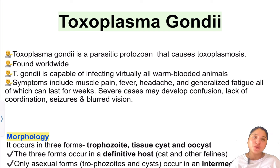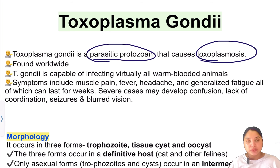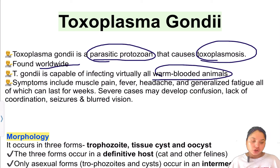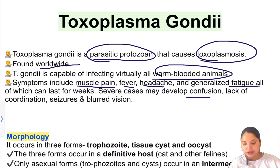Today we are going to study Toxoplasma gondii. Toxoplasma gondii is a parasitic protozoa which causes toxoplasmosis worldwide. Toxoplasma gondii is capable of infecting virtually all warm-blooded animals, including human beings.